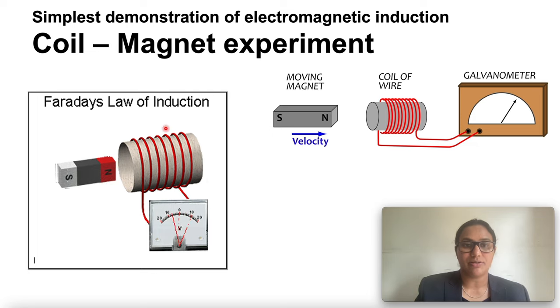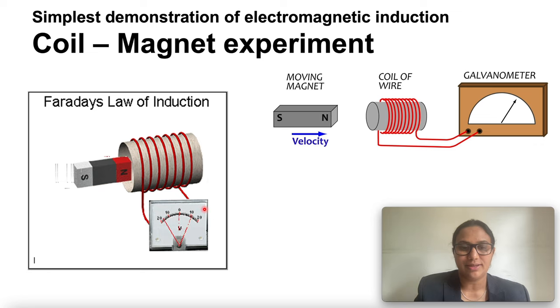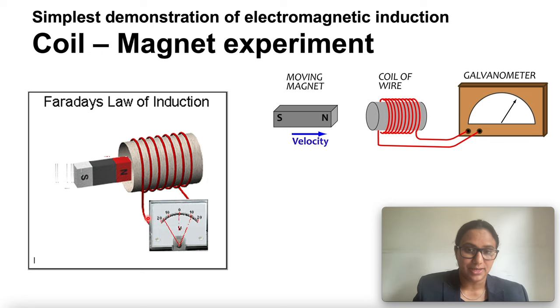What are the observations you can make from this experiment? Do you find any deflection in the galvanometer needle? There is a momentary deflection in the needle of the galvanometer to the right. This indicates the presence of current in the coil. If we withdraw the north pole of the magnet away from the coil, the galvanometer is deflected towards the left, showing that the current is now set up in the direction opposite to the first.